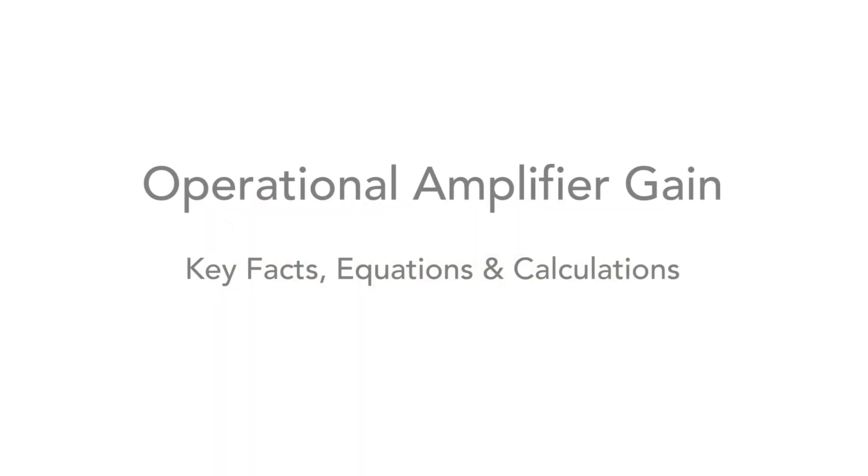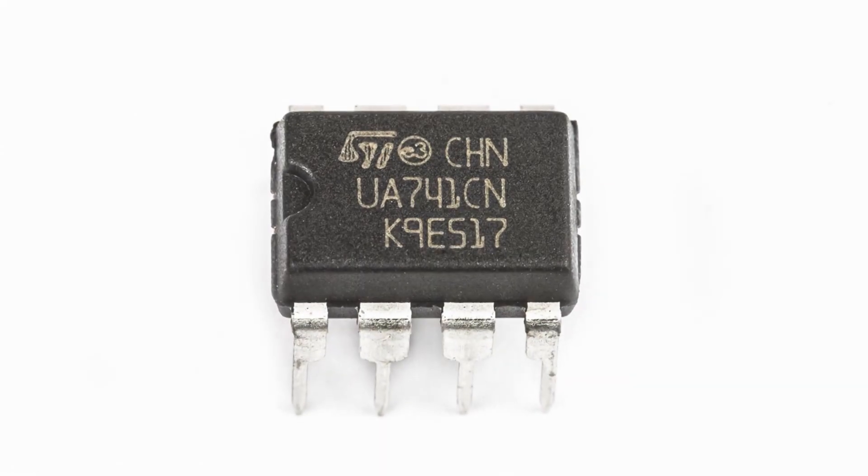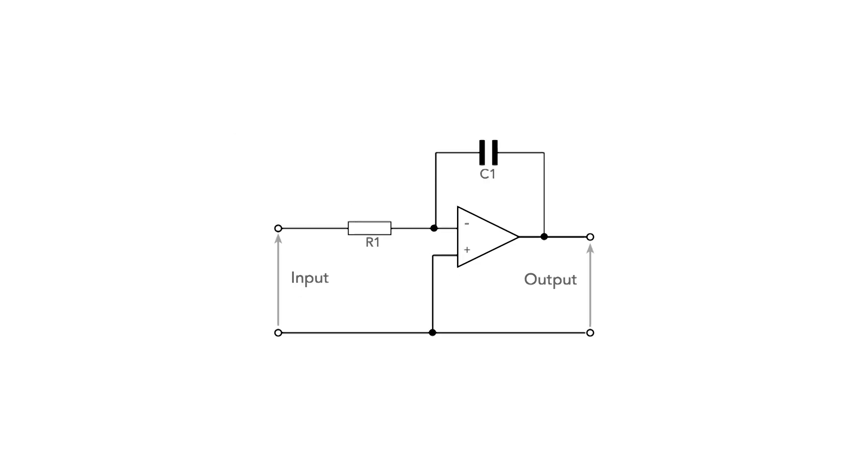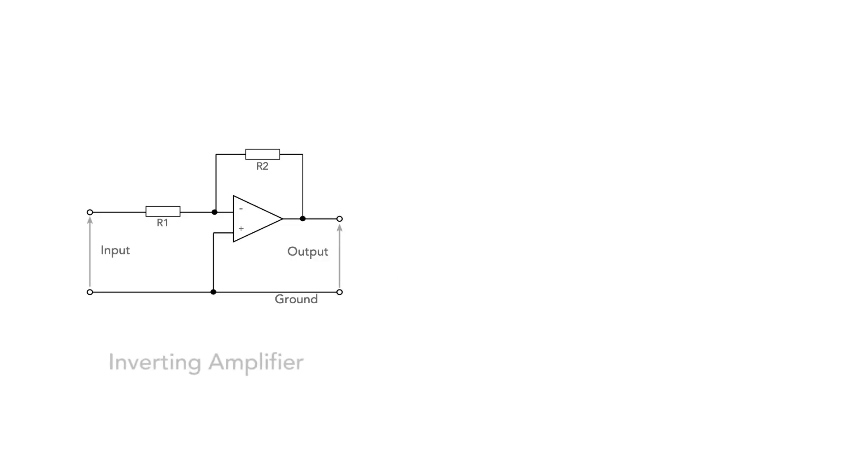Operational amplifiers or op-amps are widely used within analog electronics for a variety of purposes. Everything from oscillators to differentiators, integrators and many more things. Not surprisingly they're also used as amplifiers, plain and simple.